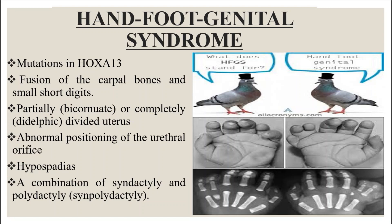Hand-foot-genital syndrome is a condition where polydactyly or limb deformities are accompanied by genital malformations. You can have polydactyly and syndactyly — collectively known as synpolydactyly — together with genital malformations such as hypospadias, where the urethral orifice is on the underside of the penis. This syndrome is caused by mutations in HOXA13.